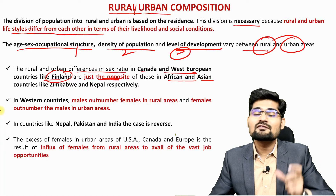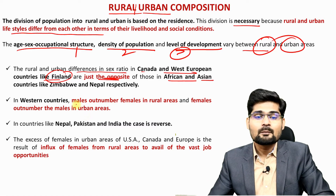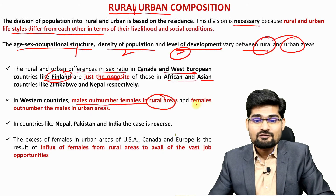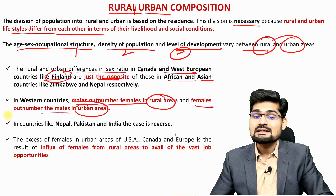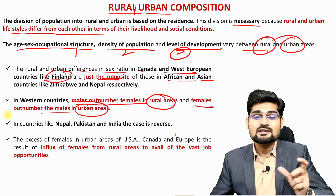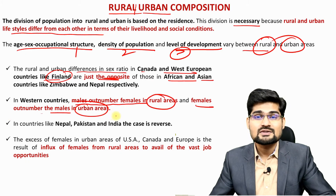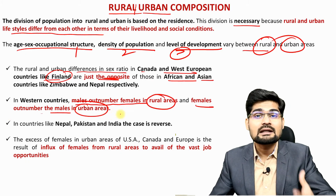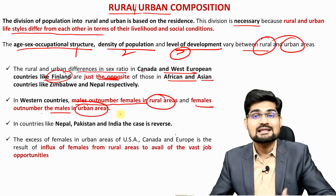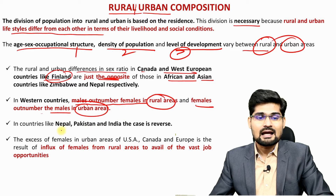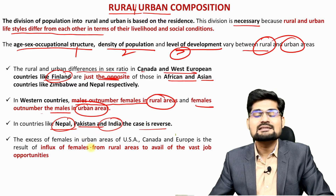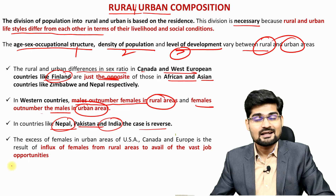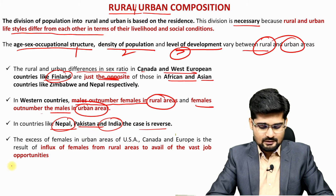In developed Western countries, more female population is involved in the working sectors in urban areas. In contrast, in Nepal, Pakistan and India the case is reverse. This shows both a developed-developing divide and a rural-urban divide in terms of sex distribution within the population.